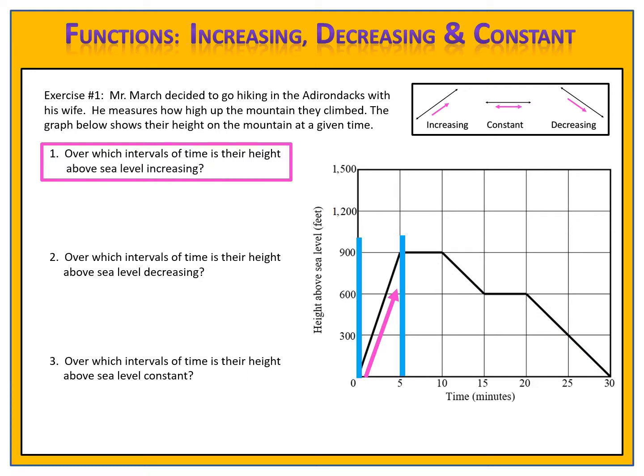I'll draw two blue lines and then focus down on the x-axis. Between zero and five is where the graph is increasing. I can write this as a single compound inequality: zero is less than x is less than five. Or I can write this using interval notation, which is (0, 5). It doesn't matter which notation you use — you should choose the one that's most comfortable for you.